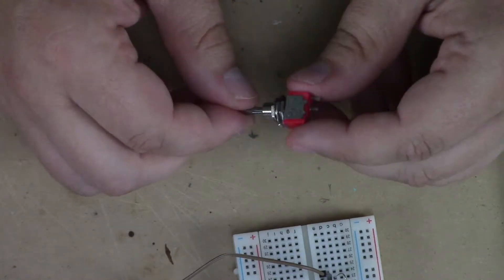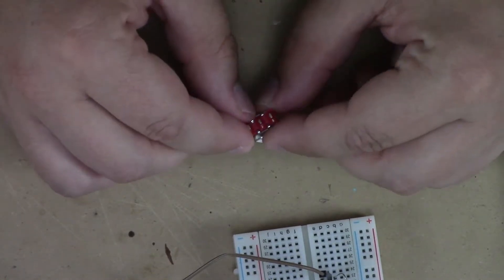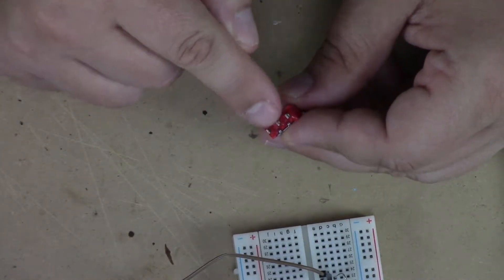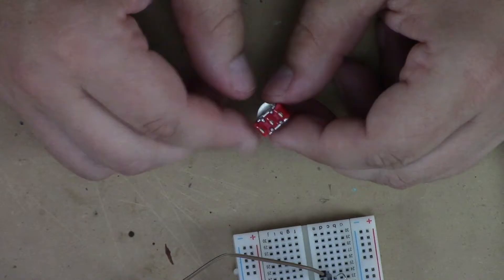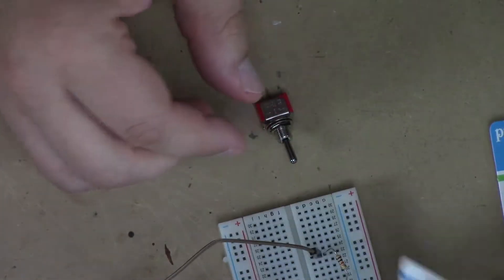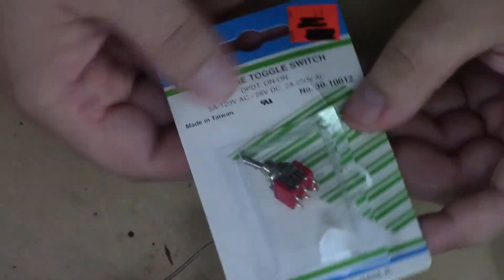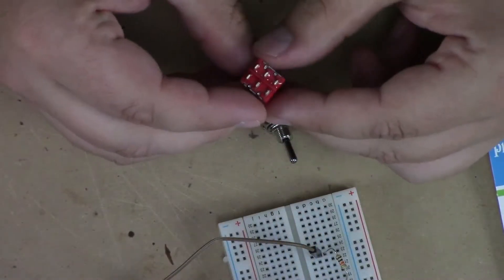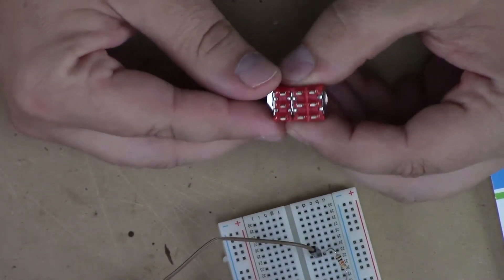Now single pole, dual throw means that it has one pole, meaning these three are the pins we're going to be working on, as opposed to a dual pole, which I have right here, a dual pole, dual throw, on, on. This one has two sets that we can work on, so you can turn two things on independently.